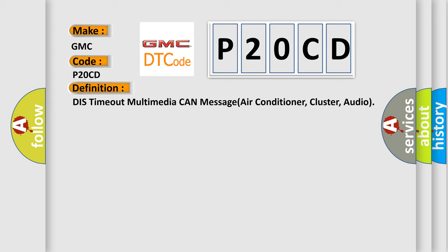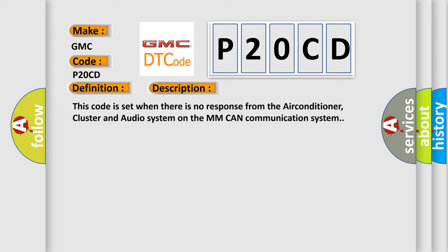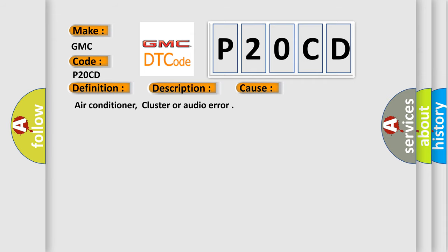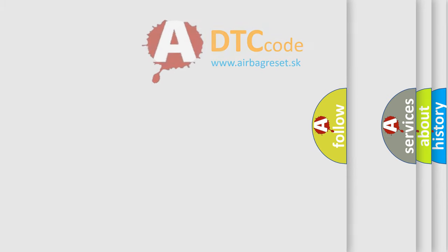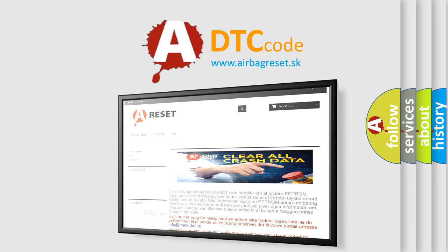This code is set when there is no response from the air conditioner, cluster, and audio system on the MMCAN communication system. This diagnostic error occurs most often in these cases: air conditioner, cluster, or audio error. The Airbag Reset website aims to provide information in 52 languages. Thank you for your attention and stay tuned for the next video.